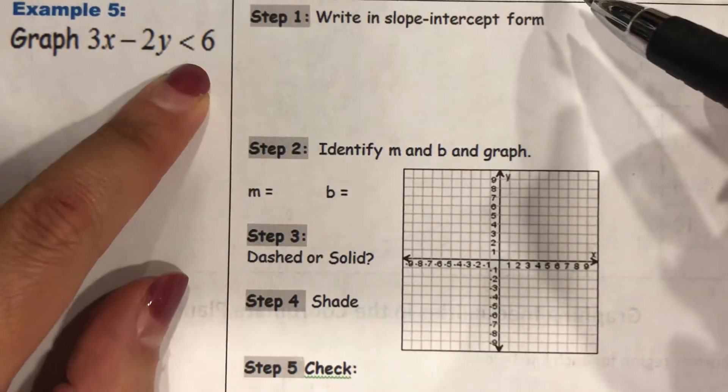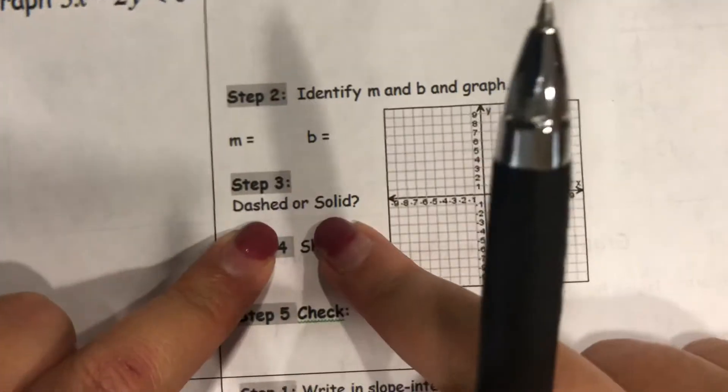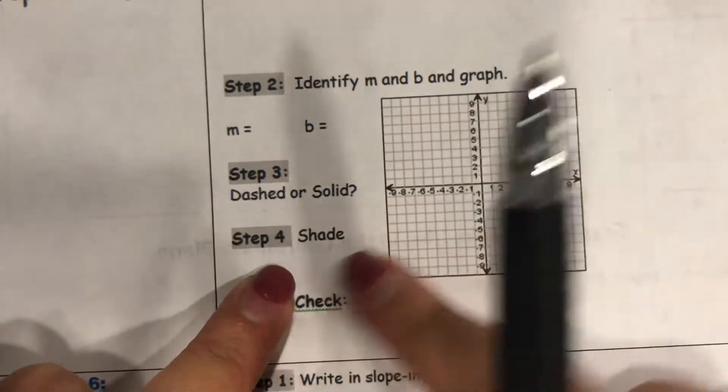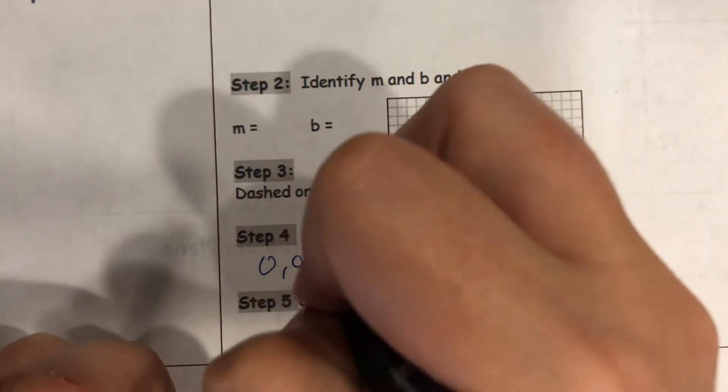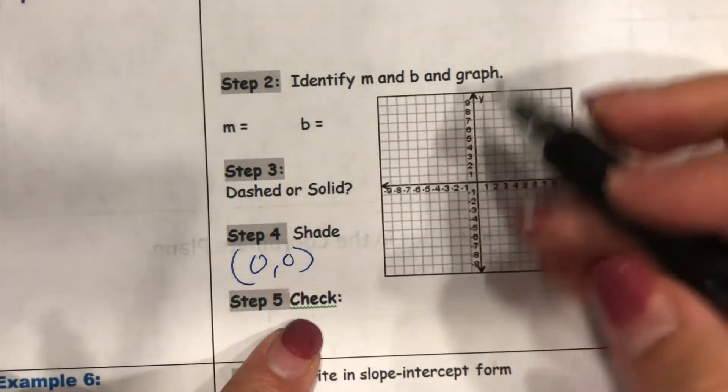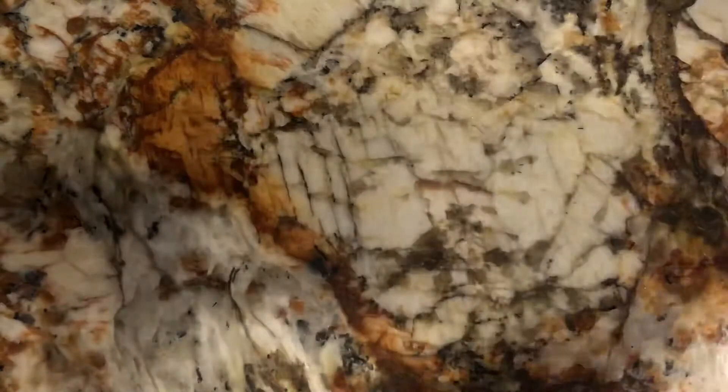Remember, since you're dividing by a negative, your sign does switch. Find your slope and your y-intercept. Is it dashed or is it solid? Figure out your shading by using point (0,0). So that's how we do example five. Flip over.